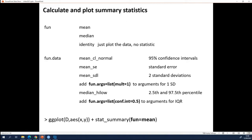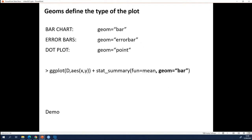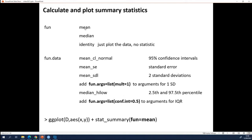What are the values for these arguments? I already shown the values for the geom: bar, error bar, point, that's it. For fun, you choose between mean if you want it to represent a mean, median if it needs to be a median. And as I said before, identity if you don't want to calculate a statistic. Fun dot data can have a lot of different values depending on what you want to put in the error bars. Confidence intervals will be this, standard errors will be this, standard deviations and percentiles for making interquartile ranges if that's necessary.